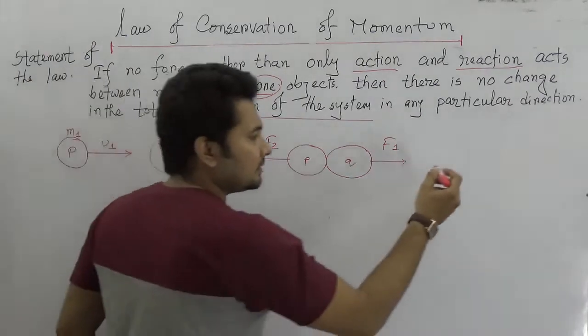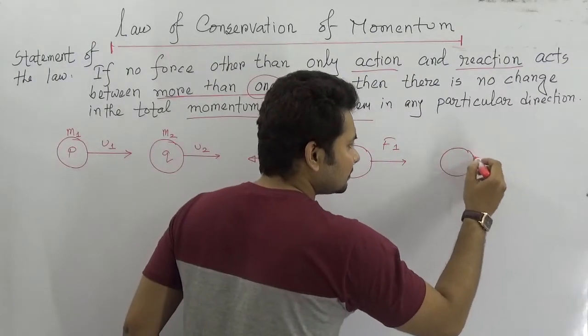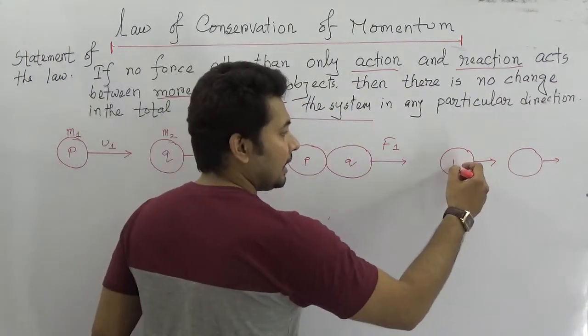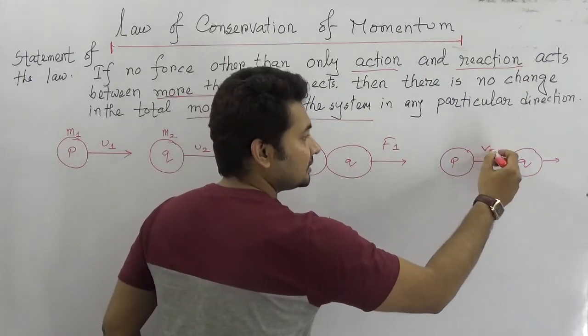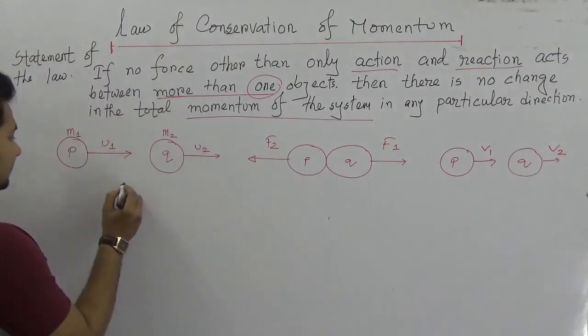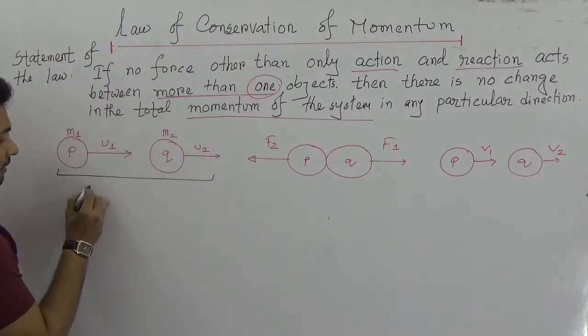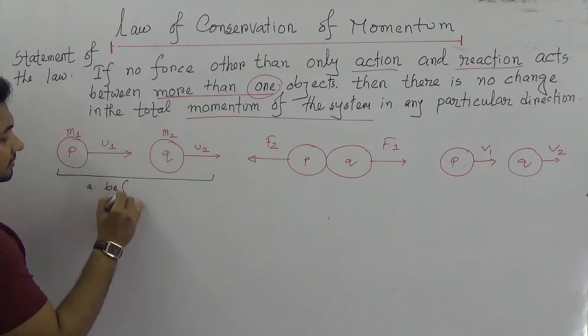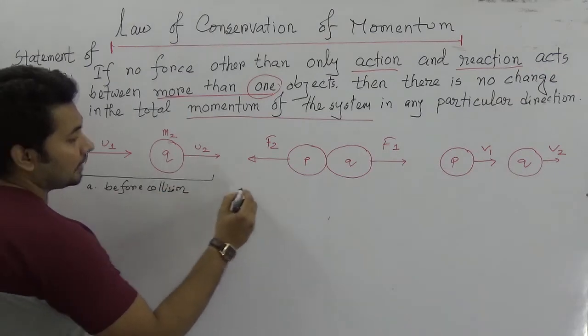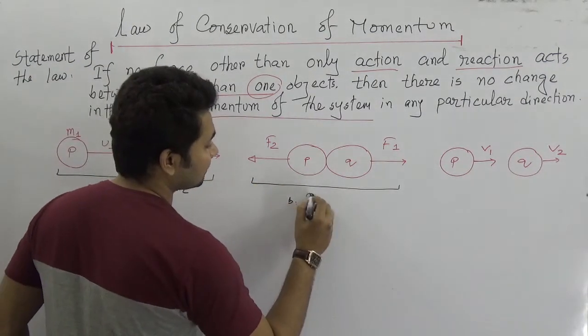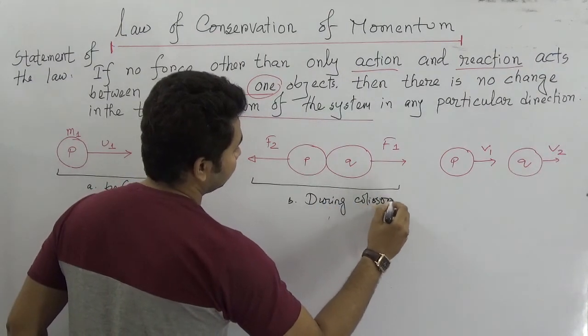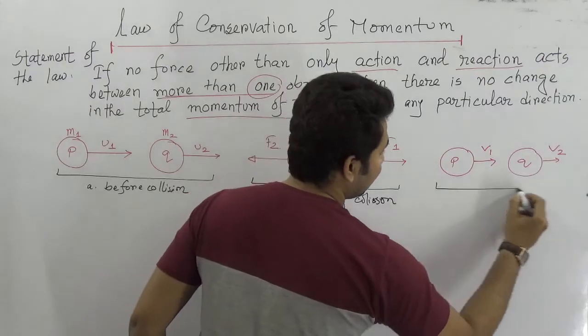So there is body P and Q going in a straight line, and if U1 is greater than U2 then P will give an action F1 to Q. Then some changes of velocity will be in those two objects. After the collision the velocity will be changed.